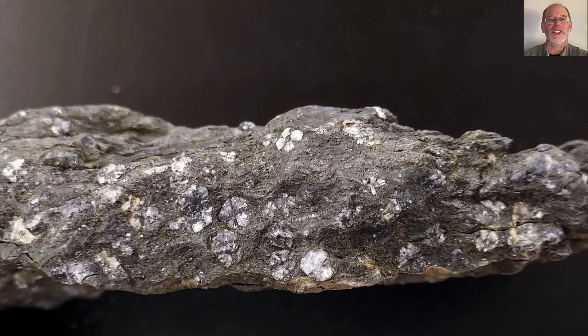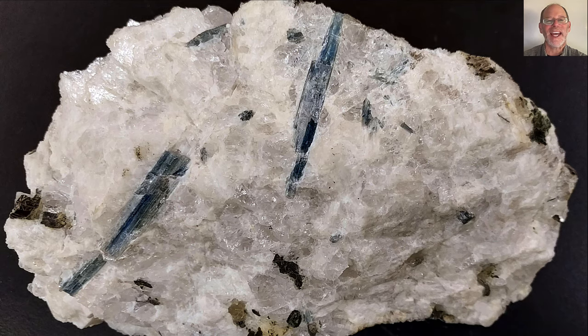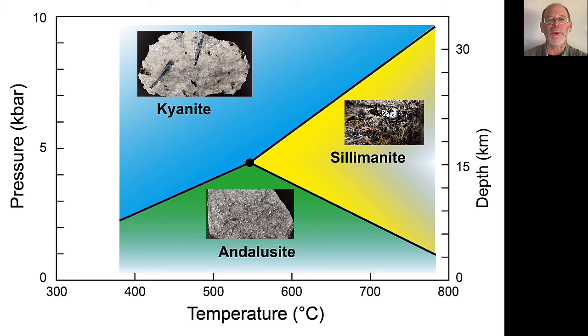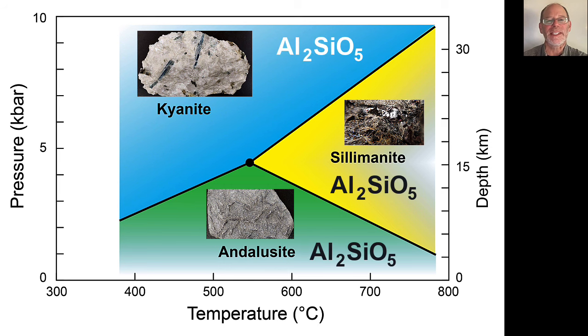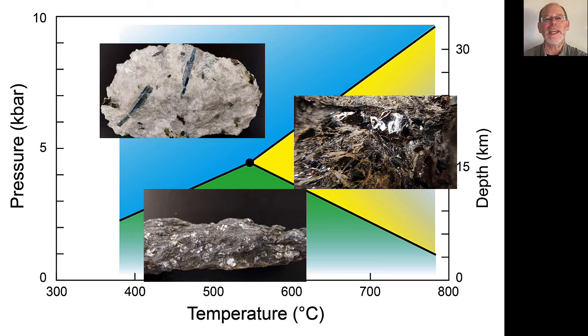Andalusite is low pressure, sillimanite is hot, kyanite is a high pressure phase. All three can coexist at the triple point dot, theoretically. They all have the same composition, but their structures are not all the same, not the same. For it's one, two, three, the aluminous silicates of metamorphic fame, metamorphic fame.